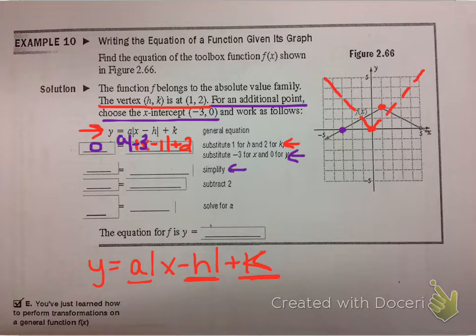And so then what it says to do is to simplify. So I had 0 over here, and on the right side I have my a. That's what I'm trying to solve for. Inside the absolute value, I now have a negative 3 right here minus 1. So I have negative 4, and then I have the plus 2 at the end.